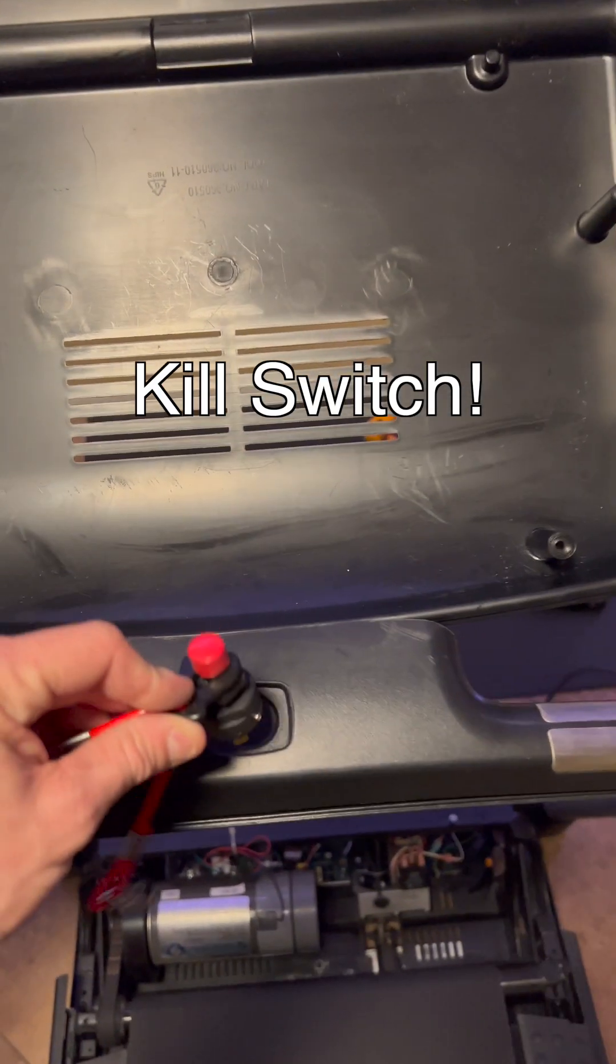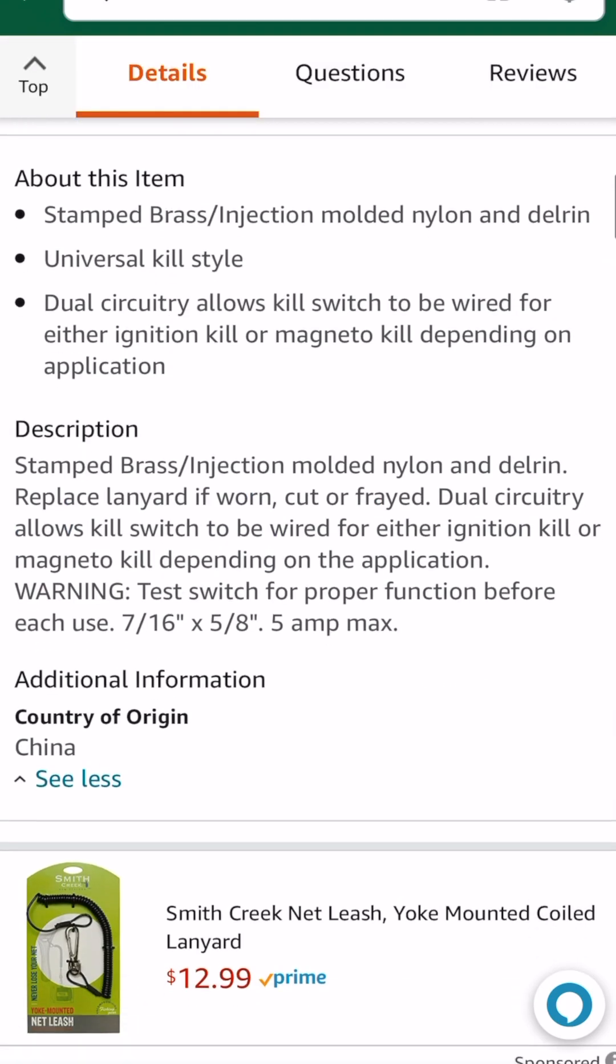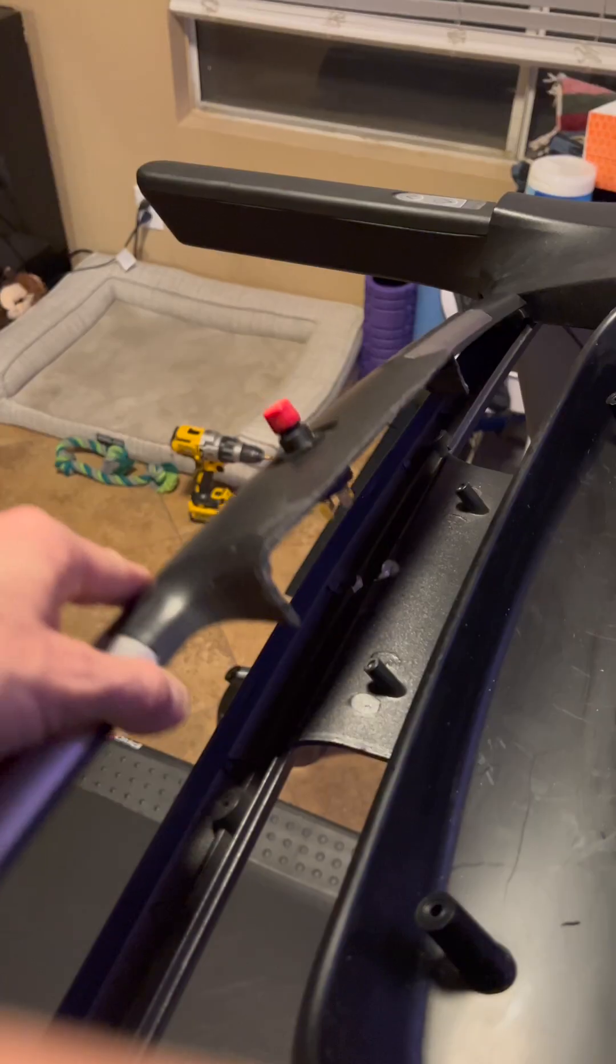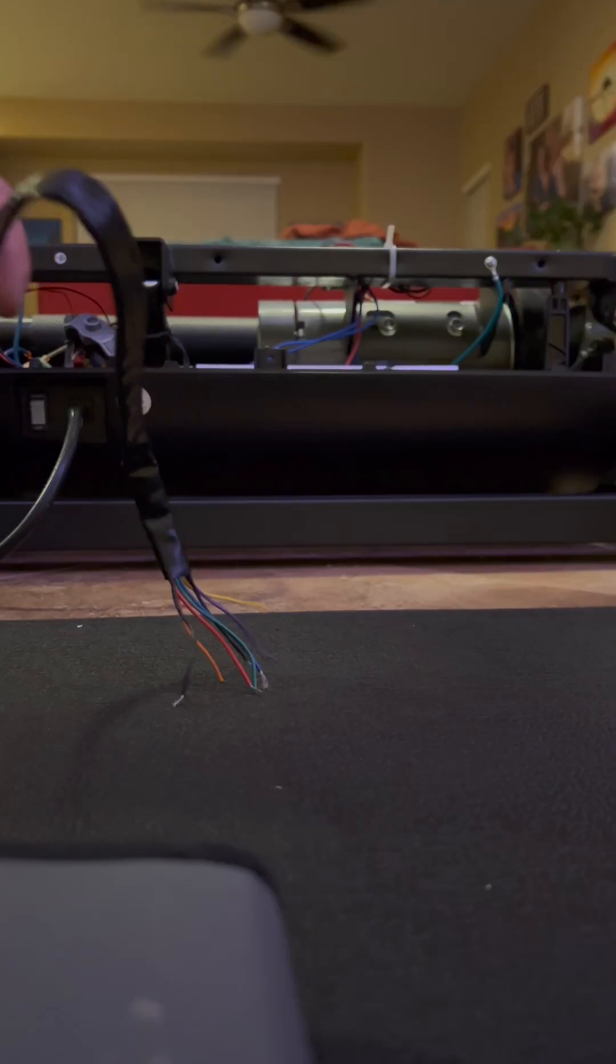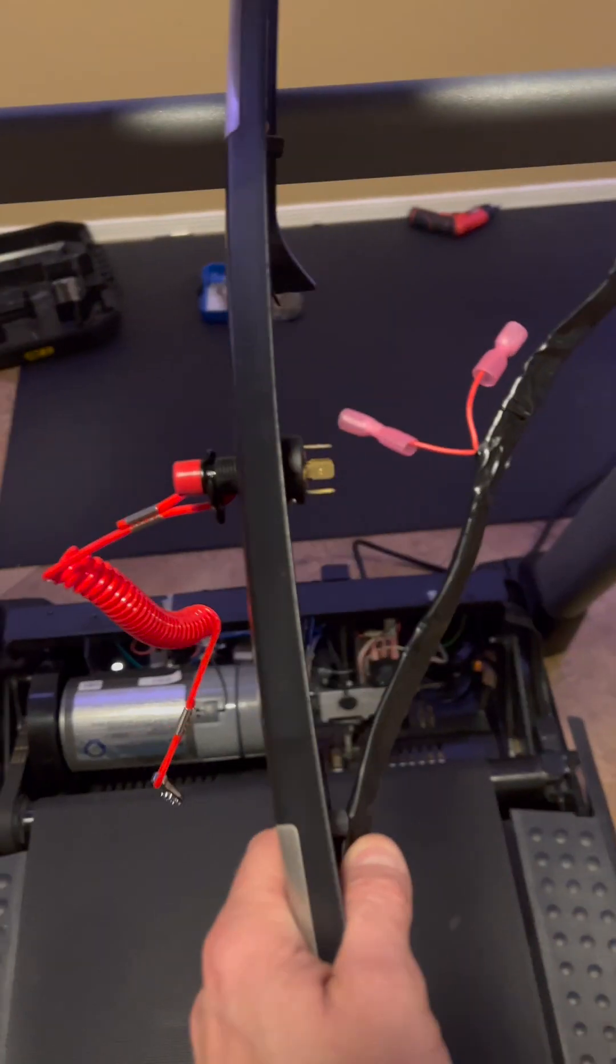Next, I had to install a kill switch in order to replace the magnetic kill switch I just removed. You've got to make sure the treadmill is safe, after all. So I drilled a hole in the handlebar and I screwed in the kill switch. I noticed I had to use a step drill in order to get those prongs through. And then I tapped into the red positive wire of the 8-pin connector.